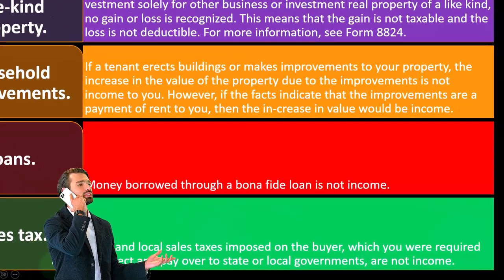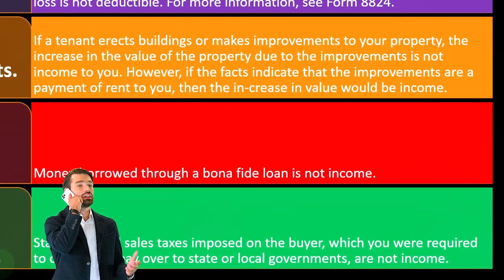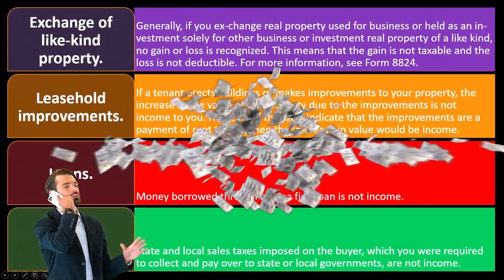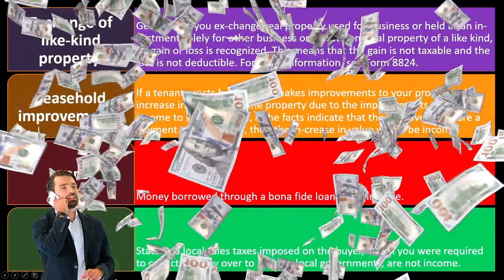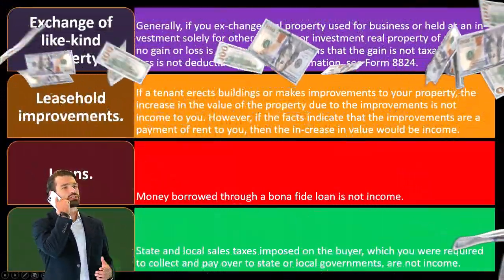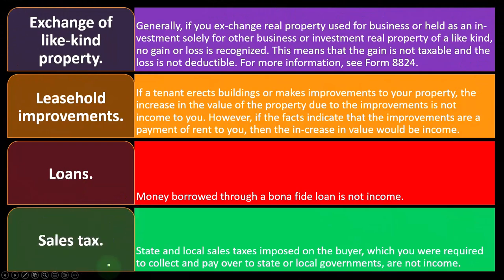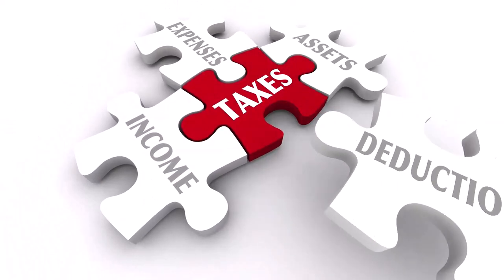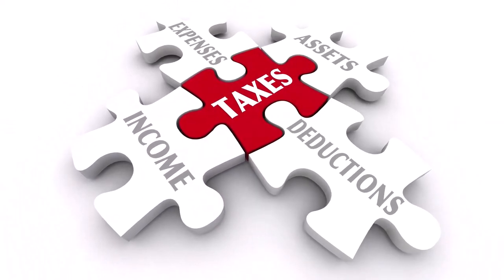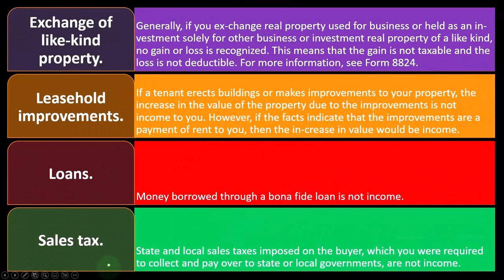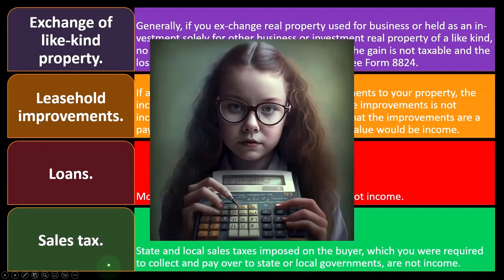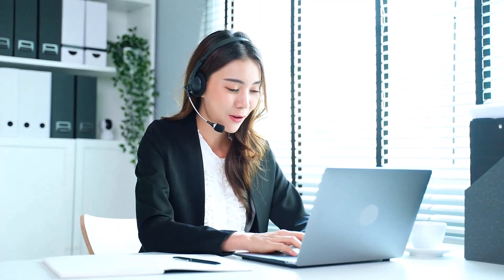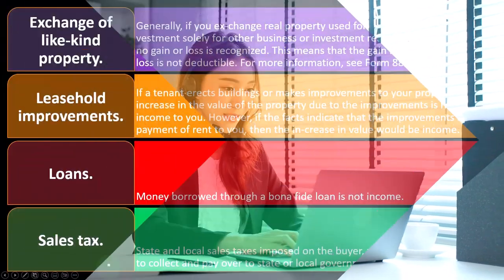If someone did include sales tax in income — recording the transaction at twelve dollars instead of ten — you should reduce the income line to exclude the sales tax. Accounting software is helpful for properly calculating and tracking sales tax, but sometimes people don't use it and need a system that works without it. Make sure you have a solid understanding of what's going on with sales tax when you're dealing with it.